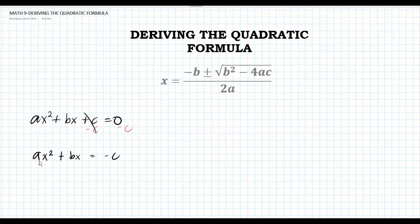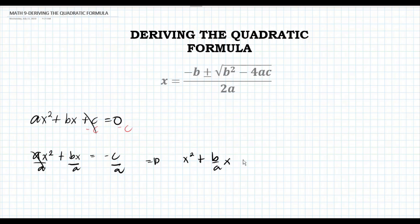Then, let us divide everything by a. After canceling, the equation will become x squared plus b over a times x equals negative c over a.